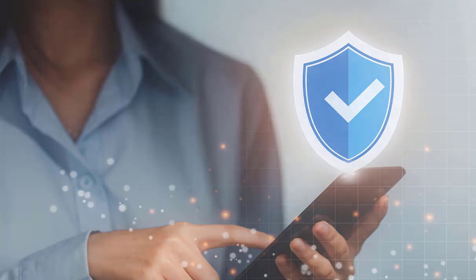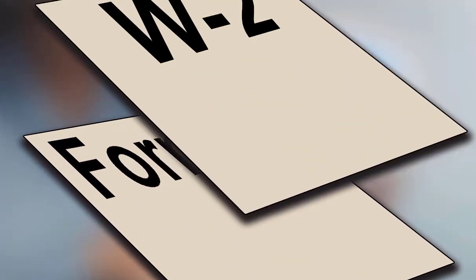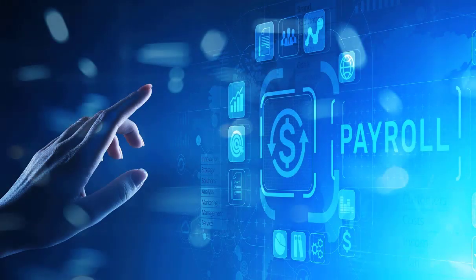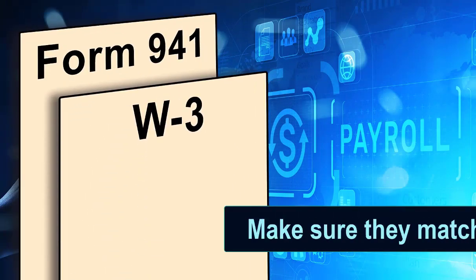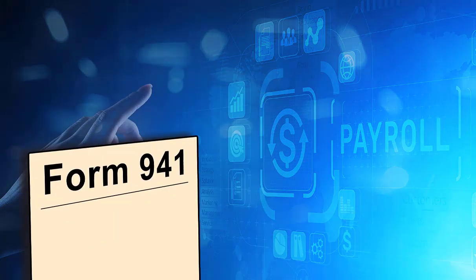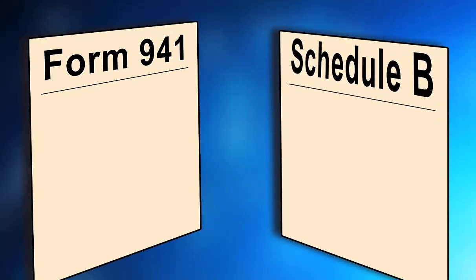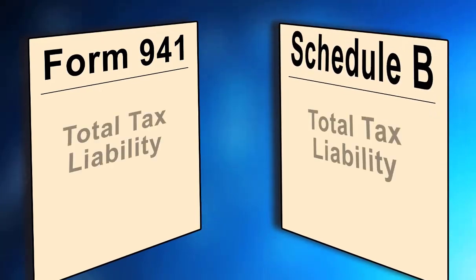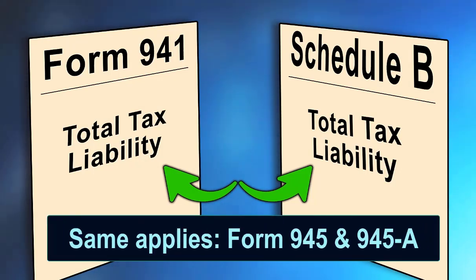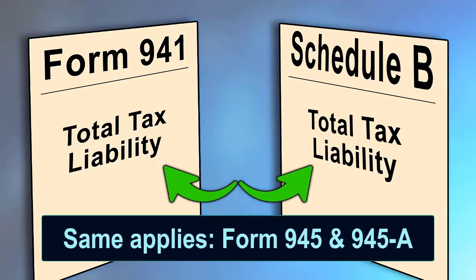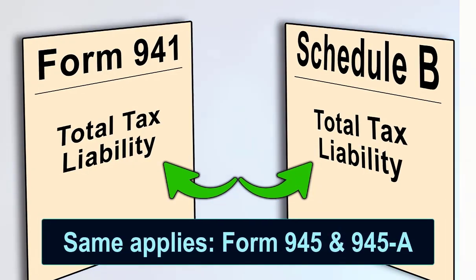Next, remember to verify the information before filing Forms 941 and W-2. Check your payroll records against totals reported on Forms 941 and W-3 to make sure they match exactly. Check Form 941 and Schedule B to make sure the total tax liability matches exactly between the two forms. The same applies to Form 945 and Form 945-A.